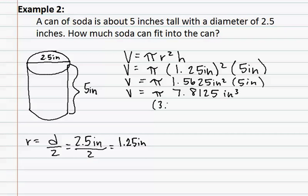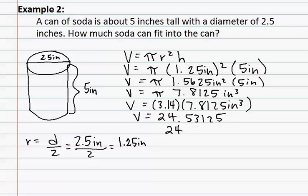When we multiply it by the pi, it results in 7.8125 inches cubed. We now substitute in the value for pi, which is 3.14, and multiply that by the 7.8125 inches cubed. This results in a final volume of 24.53125. This can be rounded to the hundredths, giving us a volume of 24.53 inches cubed.